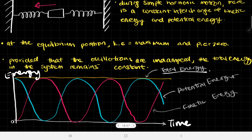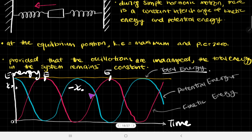Looking at the graph more carefully: kinetic energy has its maximum at the equilibrium position, and potential energy is at its peak at the maximum displacement positions — positive maximum, negative maximum, and so on. When potential energy is at its lowest, the object is at the equilibrium position. And when the object is at maximum displacement, the kinetic energy is also zero for an instant.